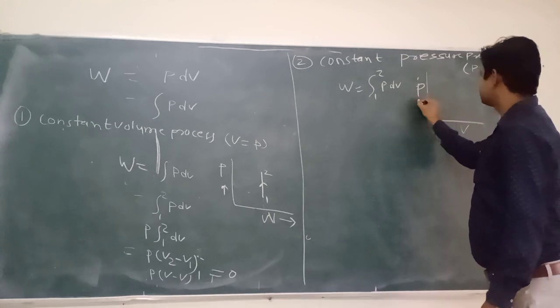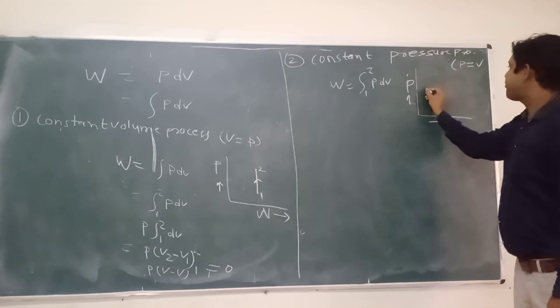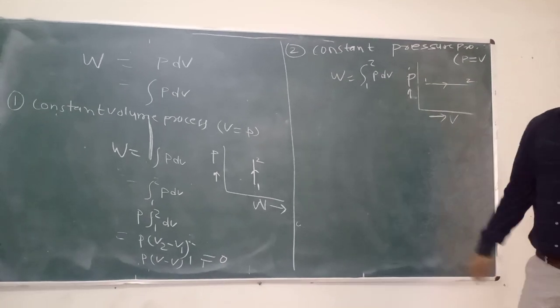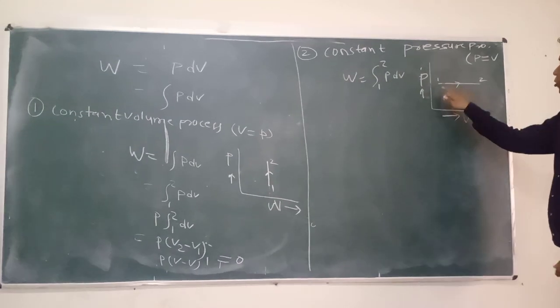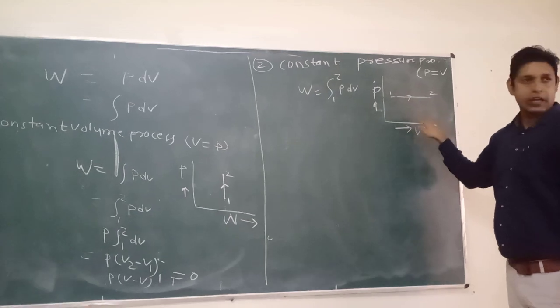And the process is constant pressure process is like that, 1 to 2. Process is 1 to 2, that is there is some displacement 2 to 1.